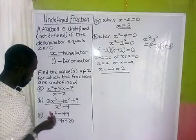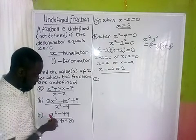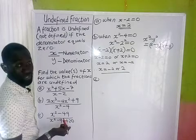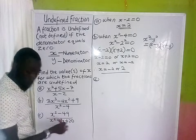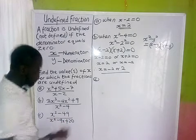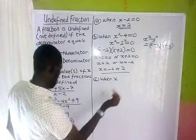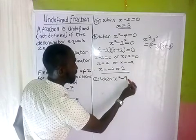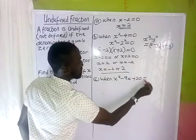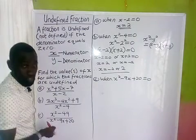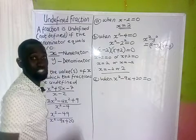Let's take the third one. The third one says: something over s squared minus 9s plus 20 equals zero. Our target is to work with the denominator only. So this fraction is undefined when s squared minus 9s plus 20 equals zero.